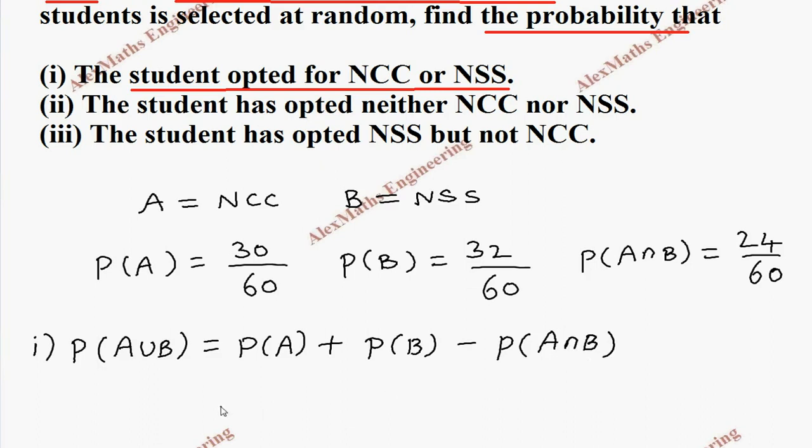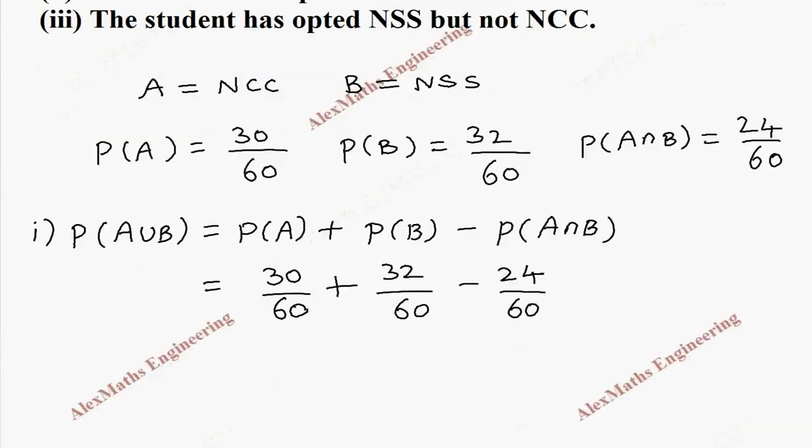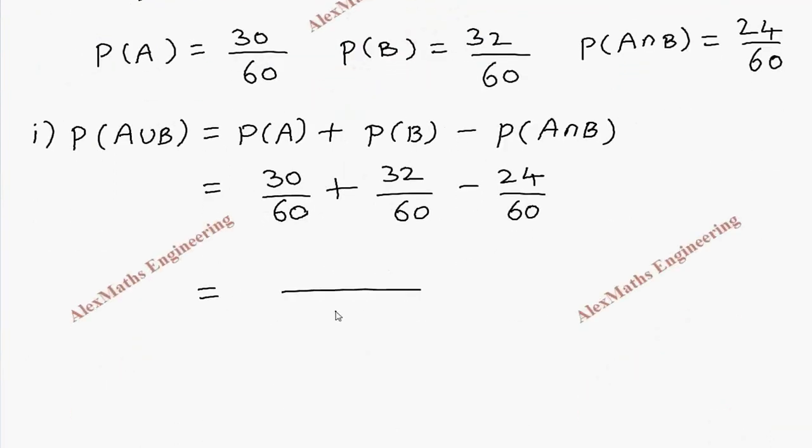B. So it is 30 by 60 plus 32 by 60 minus 24 by 60. Now we make the common denominator 60 by adding all the numerators: 30 plus 32 minus 24, so totally this is 38 by 60. We can cancel by 2, so the denominator becomes 30 and the numerator becomes 19.